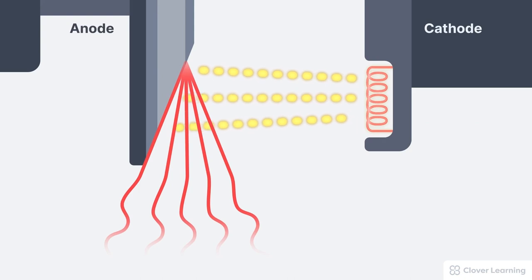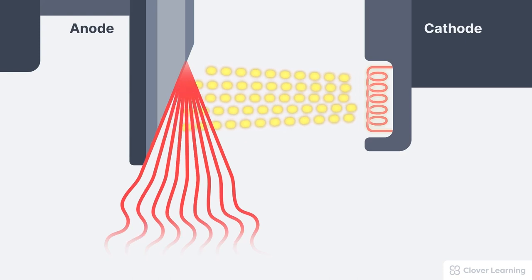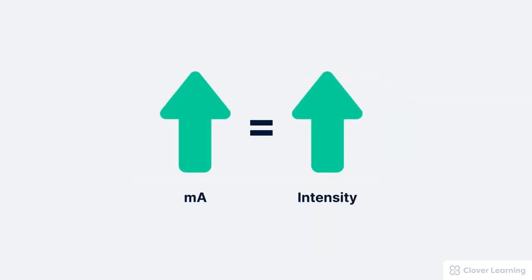The process of creating the x-ray tube current starts at the cathode filament. Setting the MA at the control panel is the primary factor controlling the amperage applied to the filament. As we increase the MA, this increases the filament amperage, which increases thermionic emission, increasing the number of electrons created, which are then available to flow across the x-ray tube and collide with the anode, creating x-rays. So tube current actually starts with thermionic emission and the filament current.